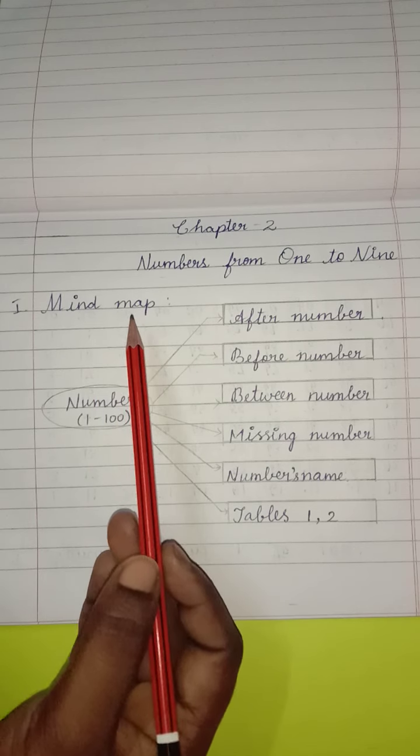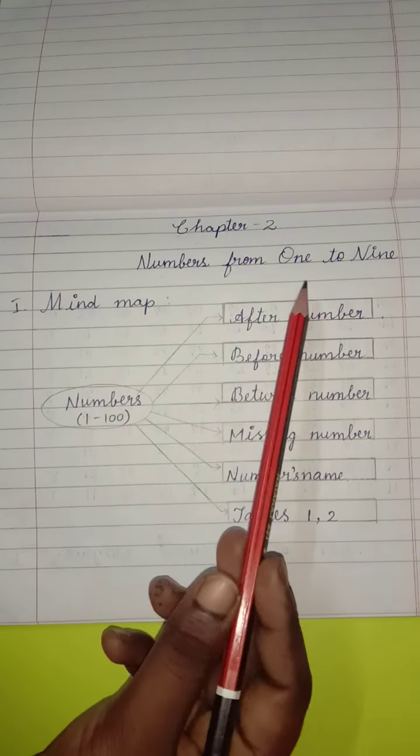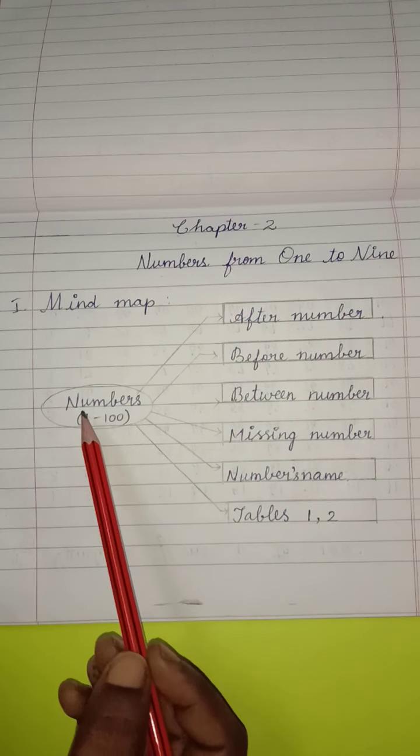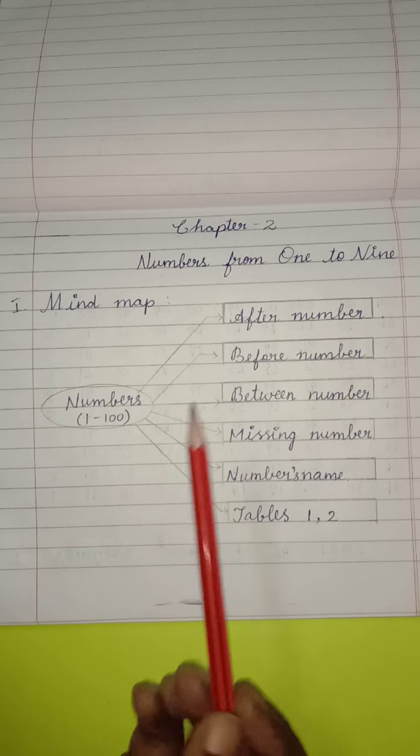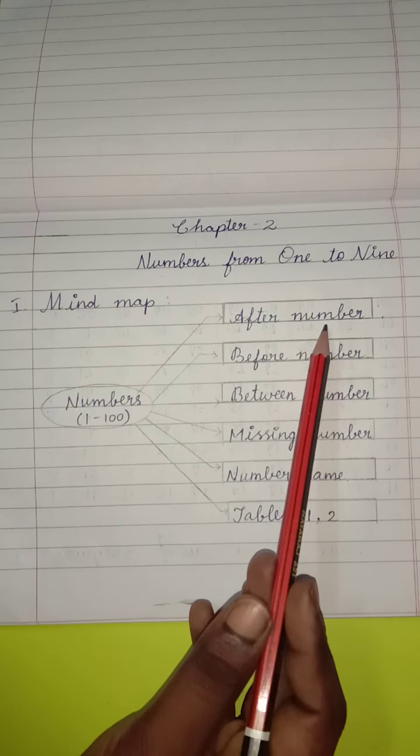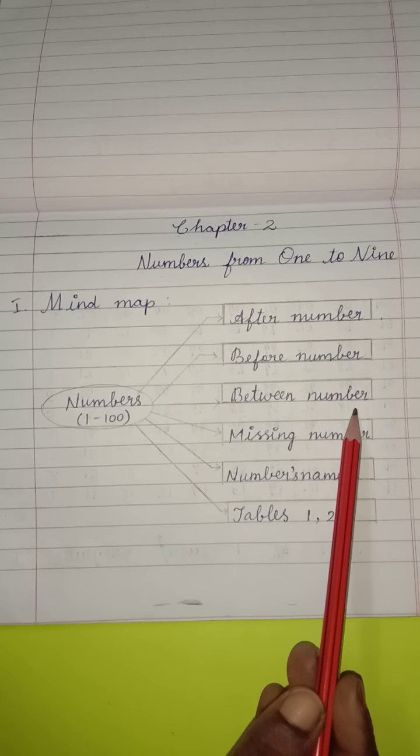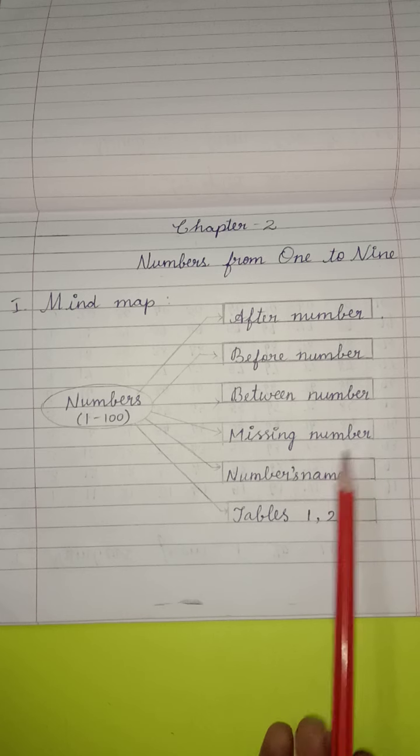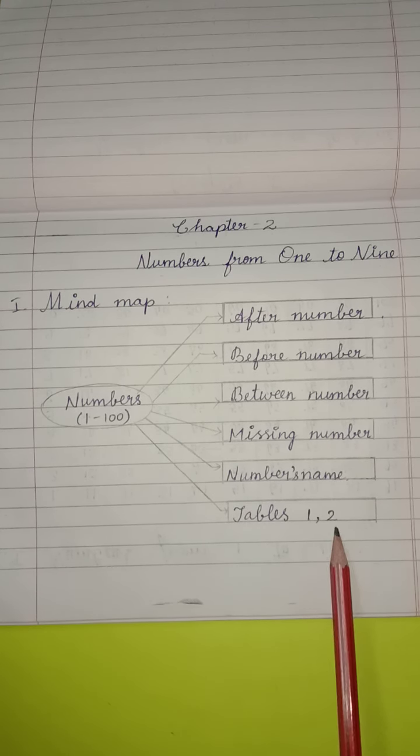Mind Map. This is the Mind Map for Chapter 2: Numbers from 1 to 9, Numbers 1 to 100. Then from 1 to 100 we are going to see after number, before number, between number, missing number, numbers name, then tables 1 and 2.